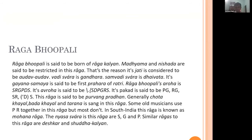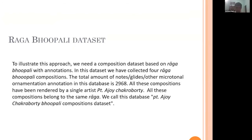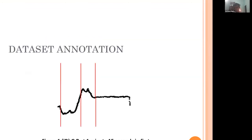Here we introduce Raga Bhopali, though we won't go into full detail due to time constraints. We collect annotations in Bhatkhande notation of a single artist named Pandit Ajay Chakrabarti. We have 2,968 annotations, and this is the way annotations are done in Bhatkhande notation.